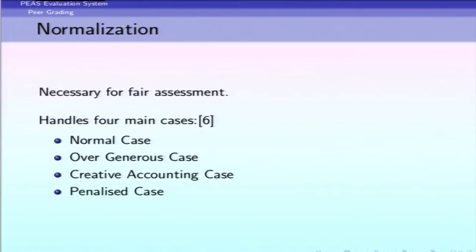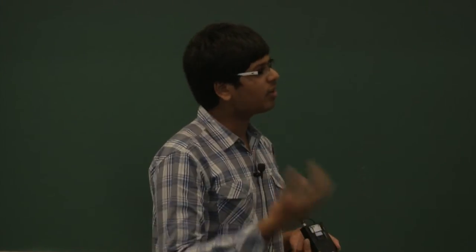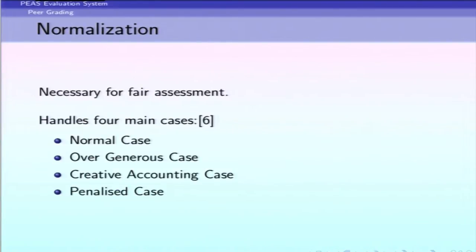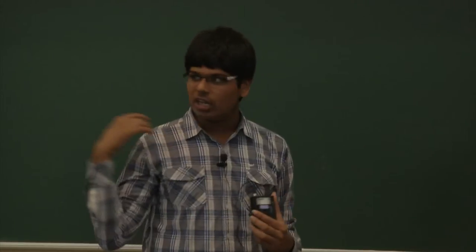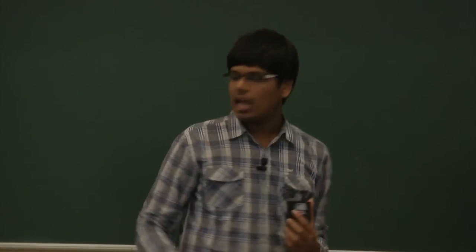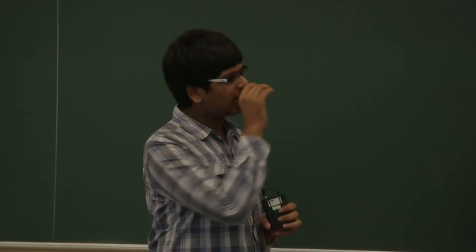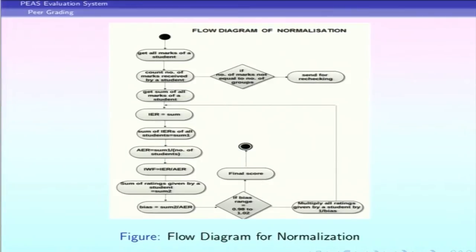Despite calibration-based ordering, students still manage to give wrong grades or use strategic grading. The cases present in the system are: the normal case where grades are given honestly; the over-generous case, where a student rates peers very highly hoping for a good grade in return; the creative accounting case, where a student gives lower grades despite knowing peers performed well; and the penalized case, where multiple peers mutually target one student with low grades.